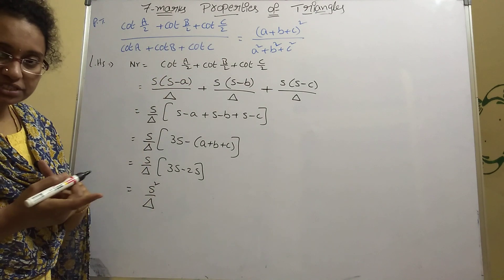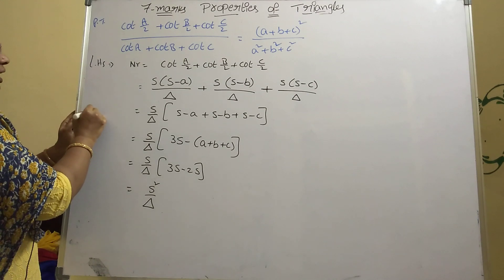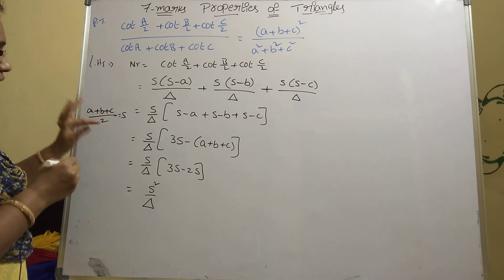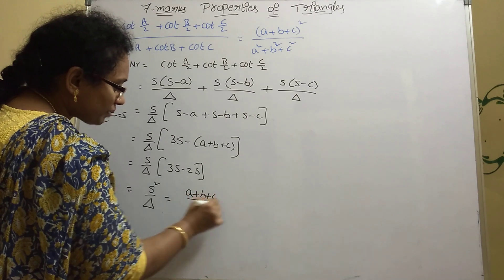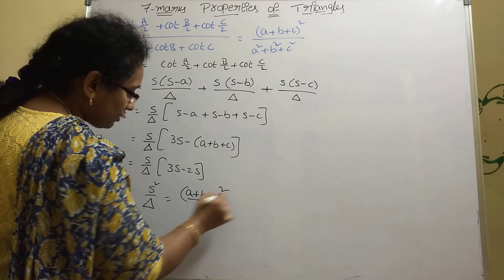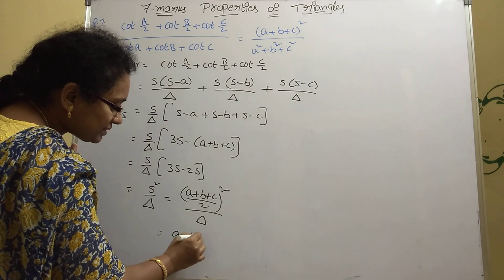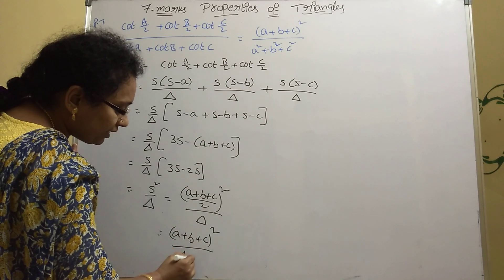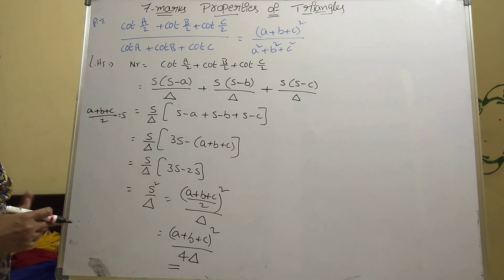We need the answer in terms of a, b, c. Since s = (a+b+c)/2, substituting gives: s² = (a+b+c)²/4. So the numerator = (a+b+c)²/(4Δ). That is the numerator only — now let's compute the denominator.